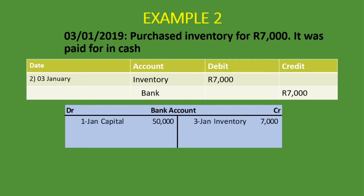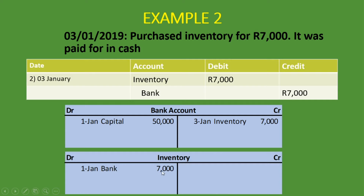Now let's do the T-account for inventory. Inventory came into the business, so we put it on the debit side. The date is 3rd of January, and the description is the contra account — bank. We put 7,000 rand as the amount. Inventory is on the debit side because it came into the business and inventory is an asset that increases on the debit side. Note: if you bought inventory on credit instead, the description would be 'creditors control' or 'accounts payable,' not bank.